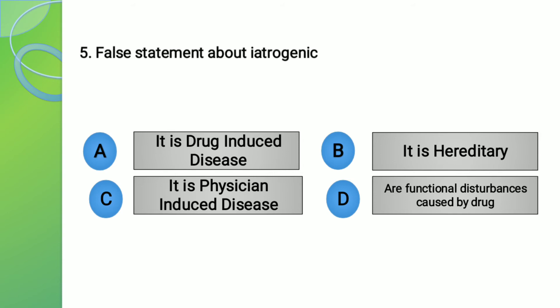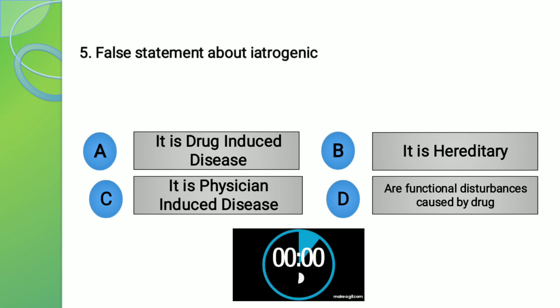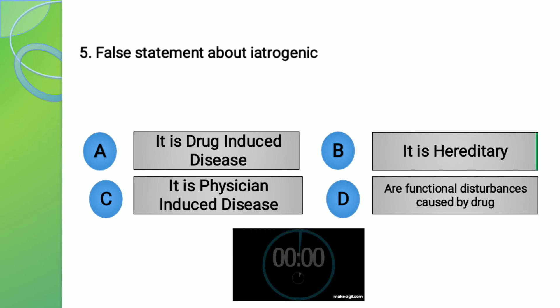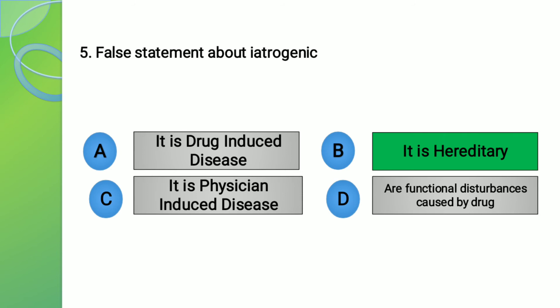The right answer of this question is option number B, that is iatrogenic disease is not a hereditary type of disease or disorder.